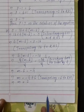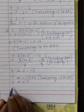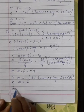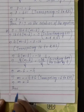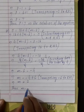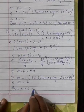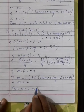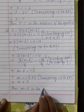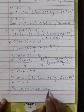Transposing minus 6 to the right hand side, its sign changes to plus 6. So m is equal to minus 4 plus 6, that is equal to 2. Thus, m equal to 2 is the solution of the equation.